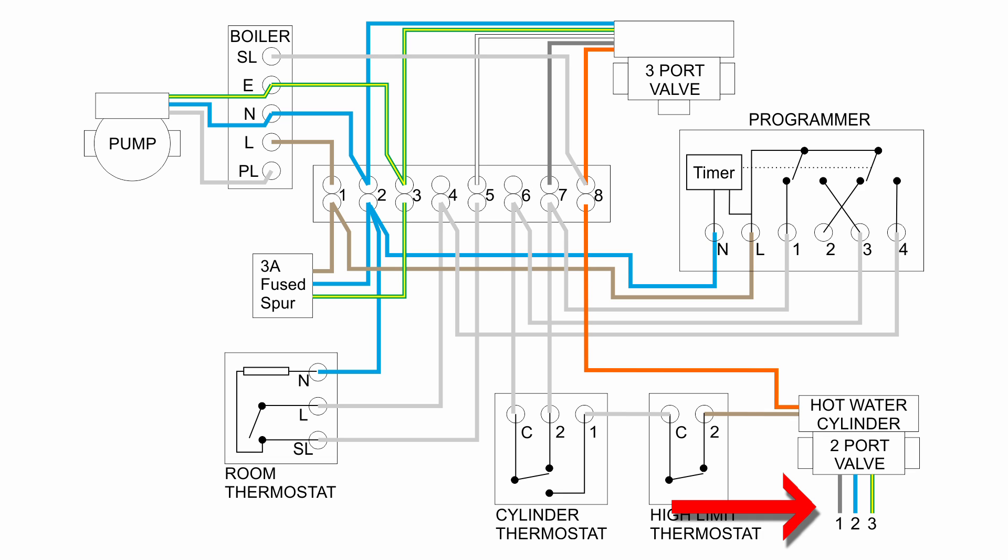And the valve has the other three connections, which are just labelled 1, 2 and 3 here, and those just go back to the 1, 2 and 3 in the wiring centre, which is the permanent line, neutral and of course the earth connection.